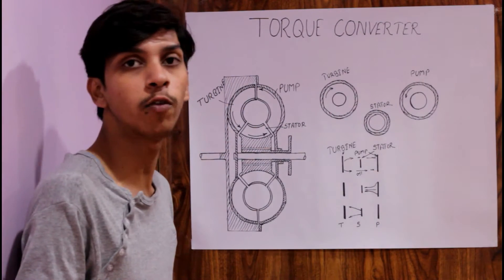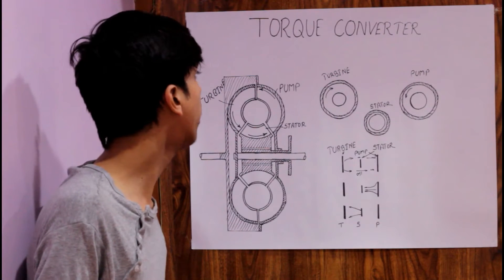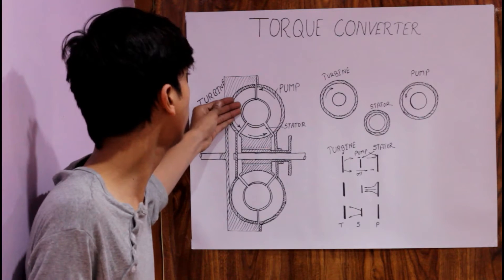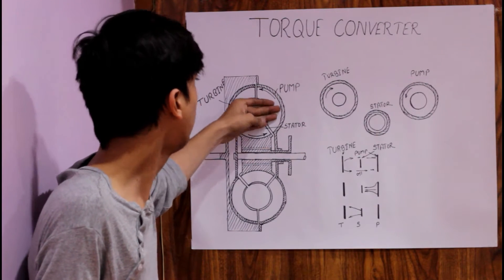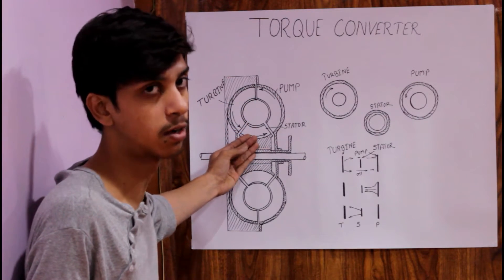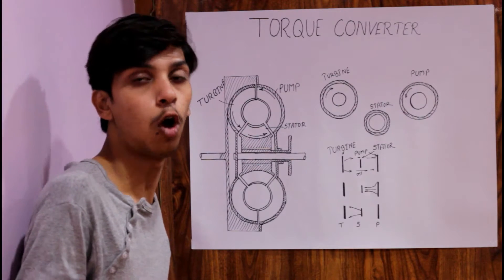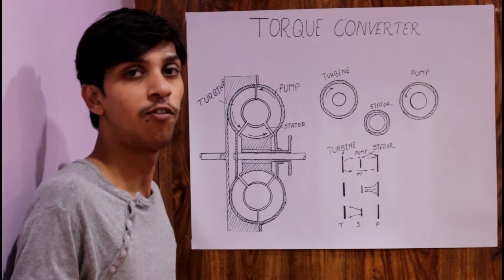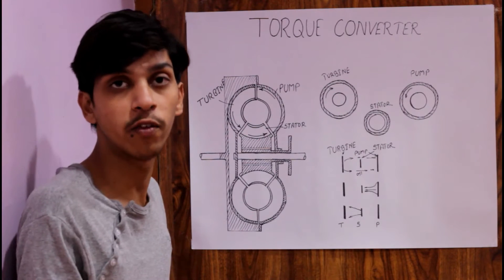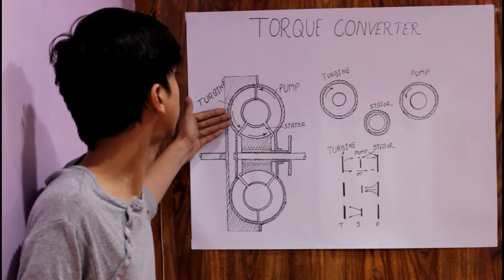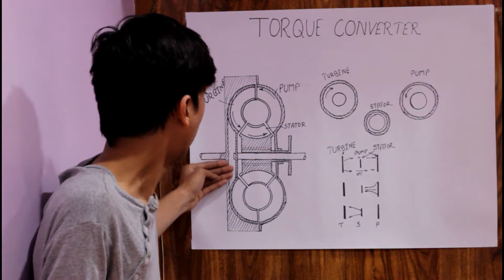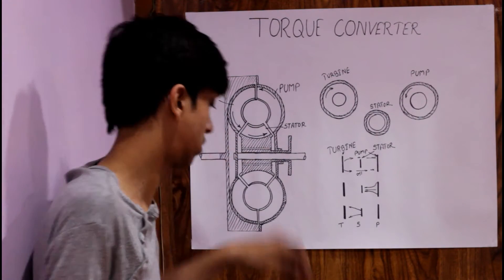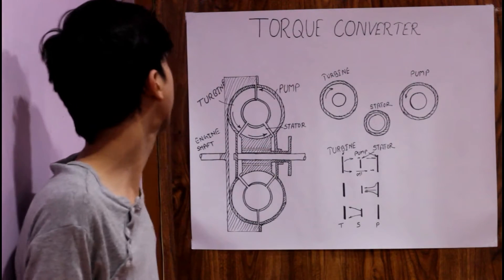The torque converter basically consists of three parts: first one is a turbine, second one is a pump, and third one is a stator. The torque converter is also based on fluid coupling — fluid is used to convert the torque. In the system, the turbine is coupled with the engine shaft.